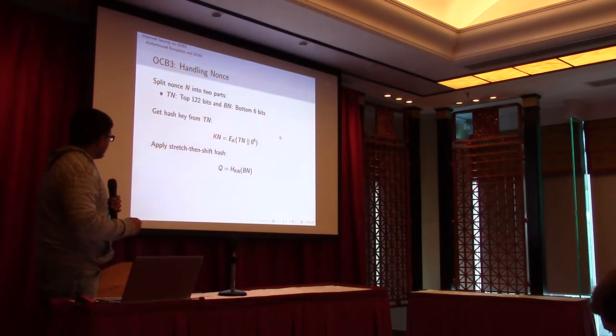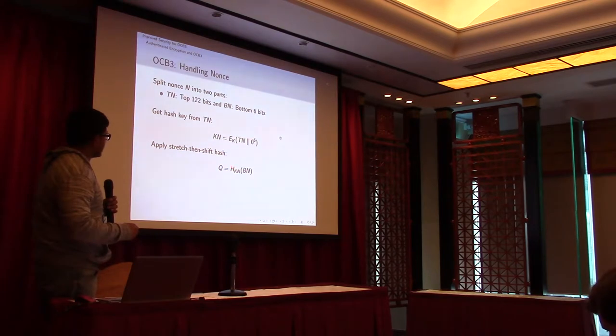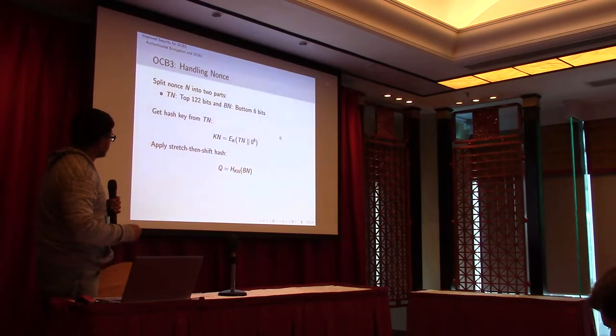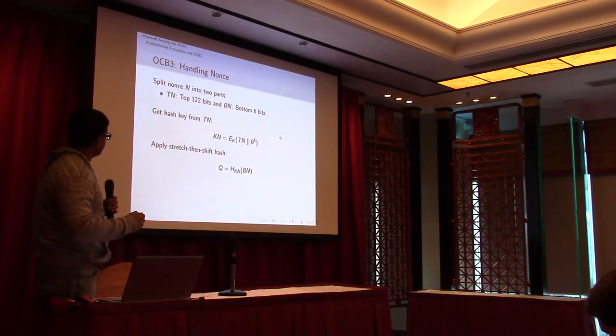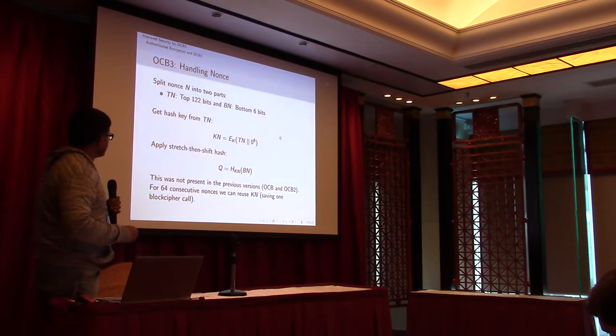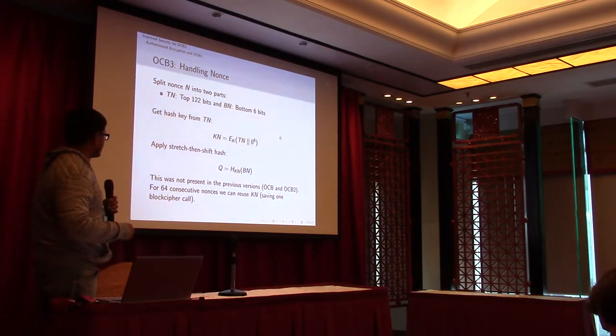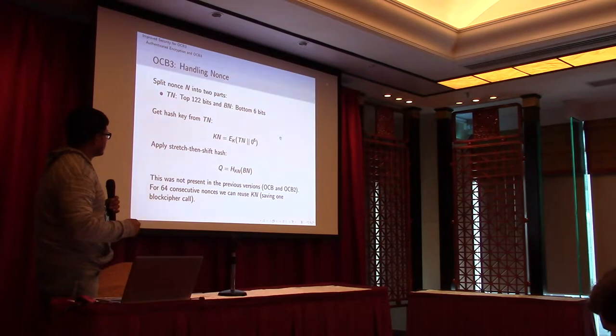And once we have that stretch-then-shift hash function, this is how we process the nonce. TN is the top 122 bits and BN is the bottom 6 bits. At first we get a hash key from TN by applying the block cipher with last 6 bit zero. And then we use this KN as a key and apply the stretch-then-shift hash function with input as BN. This property was not present in the previous version OCB and OCB2. For 64 consecutive nonces, we can reuse KN saving one block cipher call, because this KN is fixed for 64.